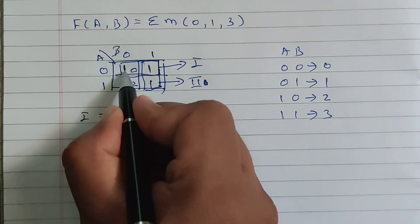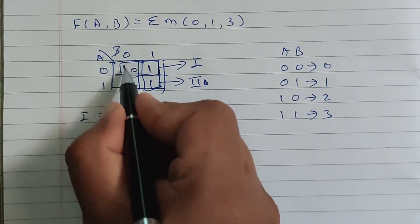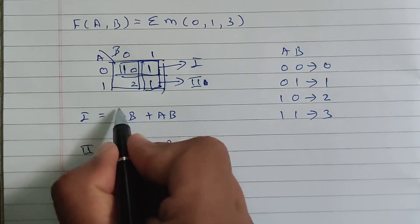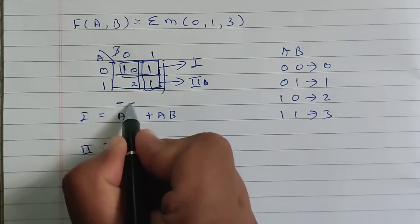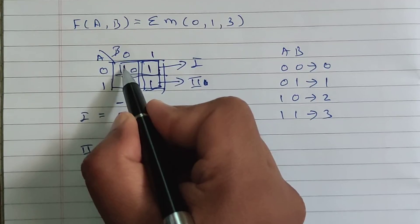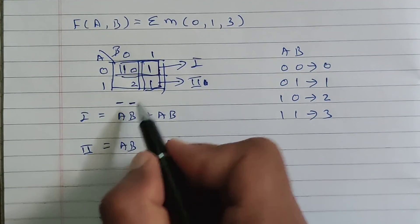Now let's see value of this one. For this one, A is equal to 0, B is equal to 0. So whichever term is 0, we will write bar for it. So A bar, B bar. Once again, pay attention. For this one, A is equal to 0, B is equal to 0. So A bar, B bar.